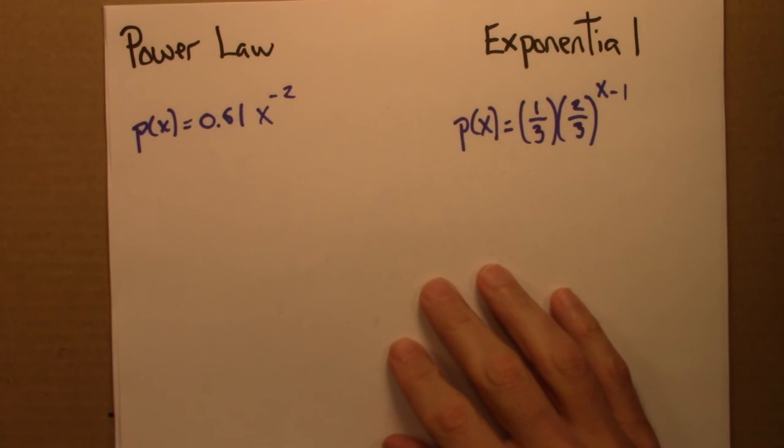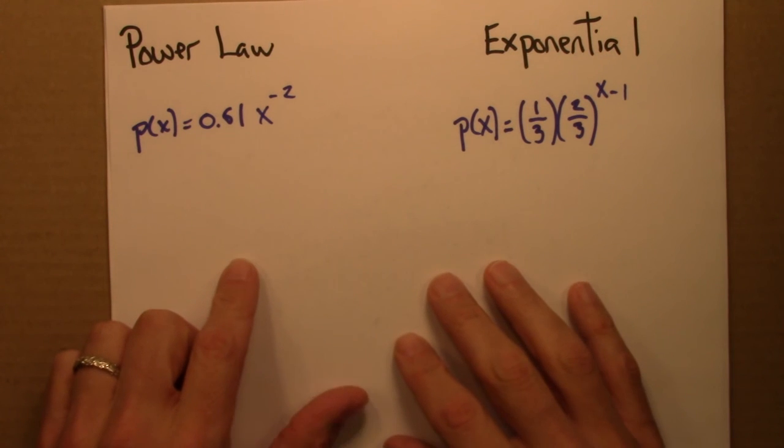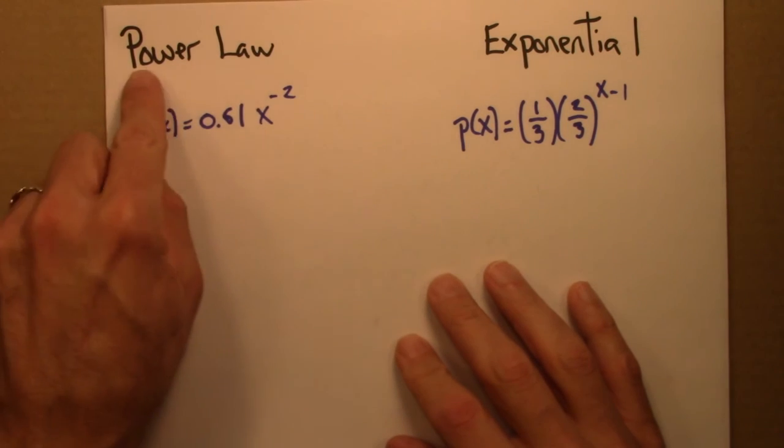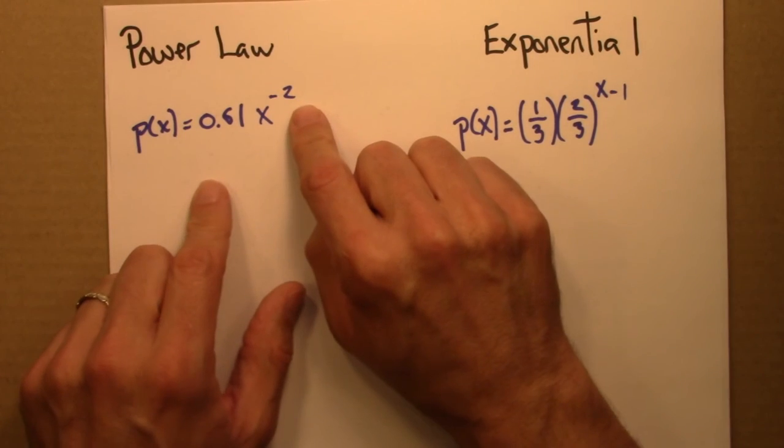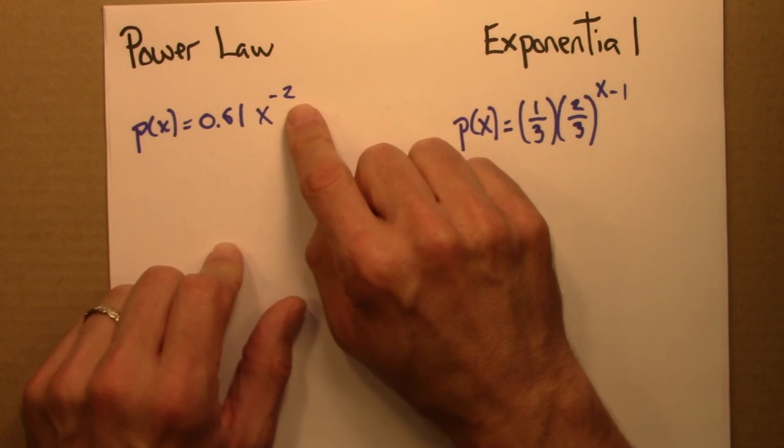In order to demonstrate that power law distributions are scale-free, I'm going to compare and contrast power law and exponential distributions. So here's a power law distribution. It's essentially the same as for the word frequency in Moby Dick, but I made this exponent exactly minus 2, just so we can work with it a little more easily.